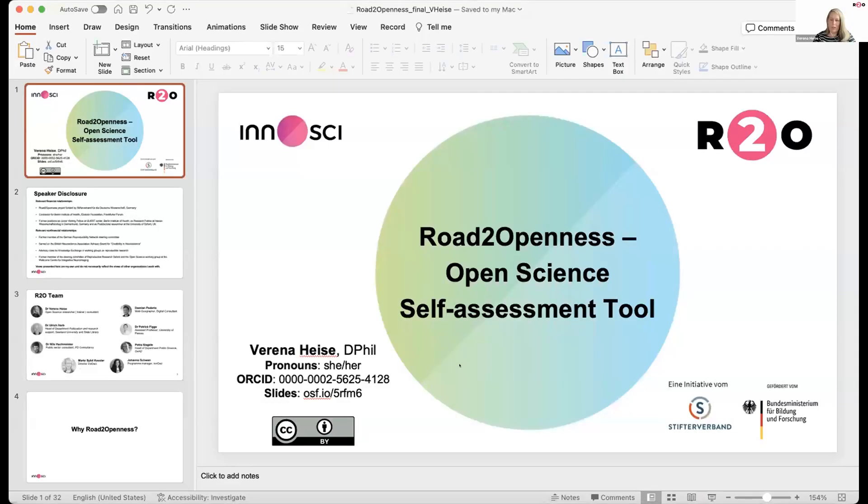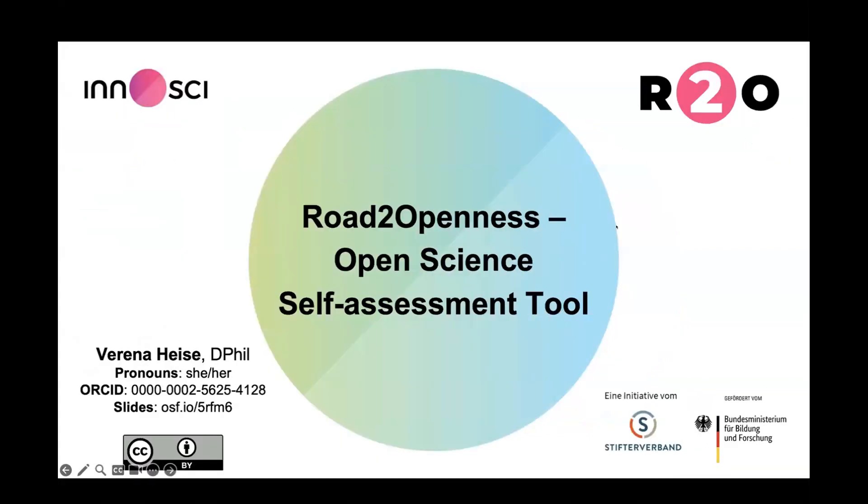Our first speaker is Verena Heist — a freelance open science researcher in Germany. Her presentation is 'Road to Openness: A Web-Based Open Science Self-Assessment Tool for Research Performing Organizations.' With that, take it away.